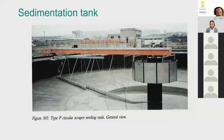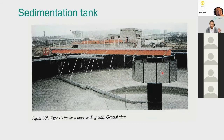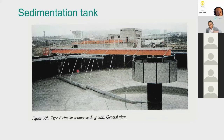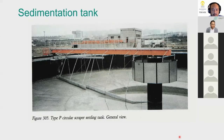In the large circular sedimentation tanks, the bottom is not steeply sloped, so a scraper — a slowly rotating arm — collects settled sludge toward the center and removes it from the bottom. This is a simple explanation of how the sedimentation tank works.